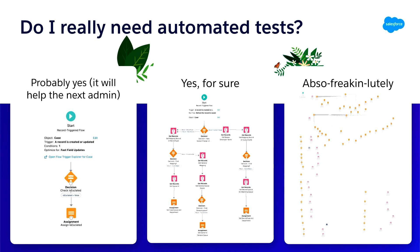If you have a flow with multiple paths, you definitely want automated tests as well, because you want to test multiple scenarios across multiple paths. You don't want to memorize exactly what input goes down which path — just define it and run them every single time. And if you have something really complex, you probably want to refactor your flow first. But if you can't, then you absolutely need automated tests, because there's no humanly possible way to test all the different path combinations consistently and repeatably.